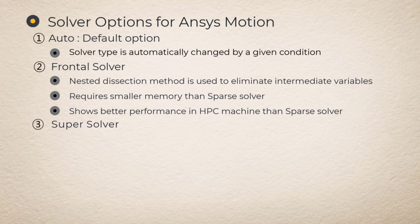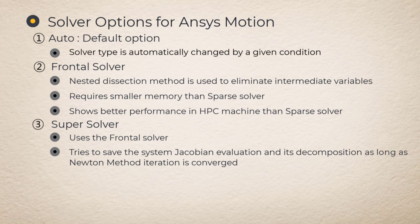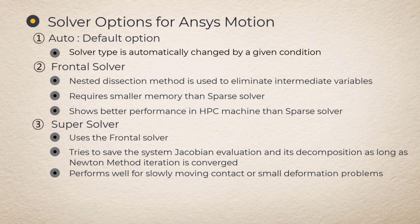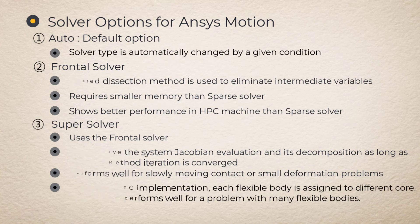Super solver option. This option uses frontal solver option as its basis. This option tries to save the system Jacobian evaluation and its decomposition as long as Newton method iteration succeeds. This solver performs well for slowly moving contact or small deformation problems. In current HPC implementation, each body is assigned to a different core so that it performs well for a problem with many flexible bodies.